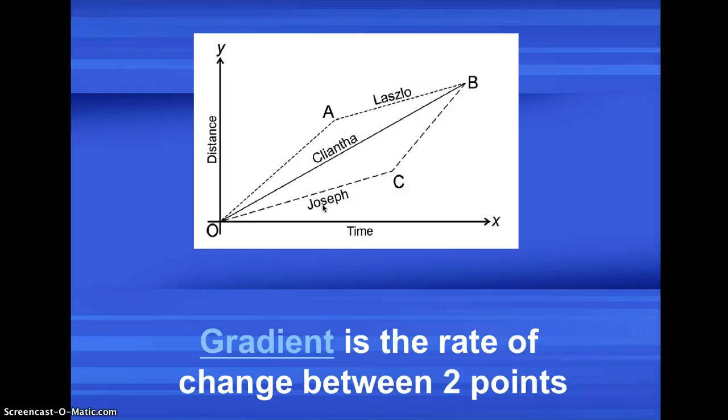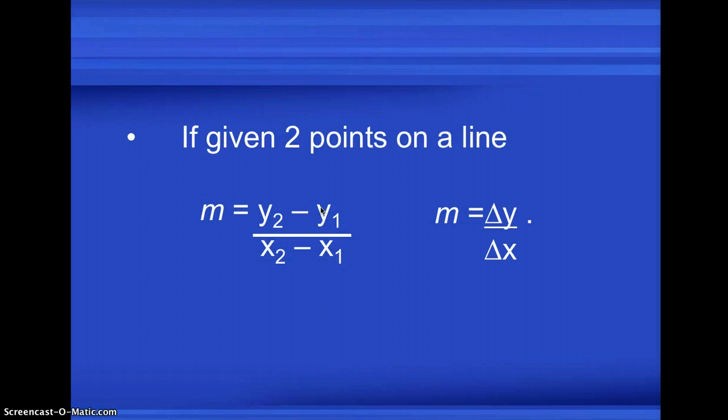In that exploration, gradient represents the rate of change between two points. In that exploration, you were asked to get the gradient of points O to A and then A to B, O to B and O to C and C to B. So in that exploration, the two points, you did Y2 minus Y1 divided by X2 minus X1 or when your point O is at the origin,